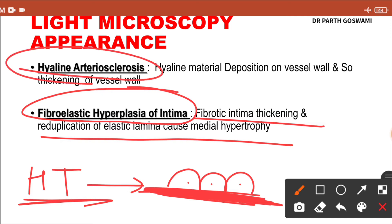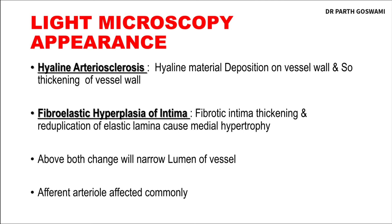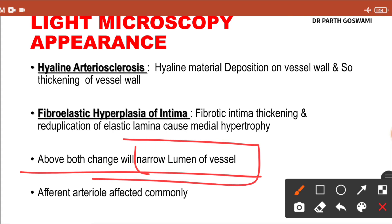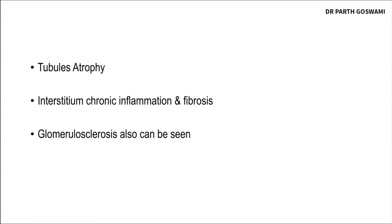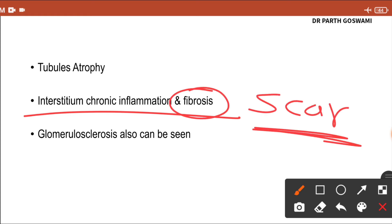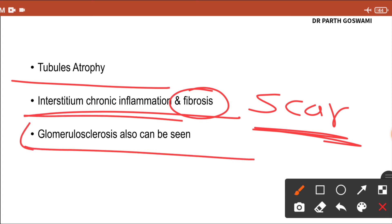Both changes — hyaline arteriosclerosis and fibroelastic hyperplasia of the intima — will narrow the lumen of the blood vessel. If the intima is thick, the lumen gets narrow, affecting blood supply to the kidney, and most commonly the afferent arterioles are affected. In the advanced stage, the interstitium shows chronic inflammation and fibrosis, leading to scar formation and granular appearance. Tubular atrophy and global glomerulosclerosis can also be seen in advanced stages.